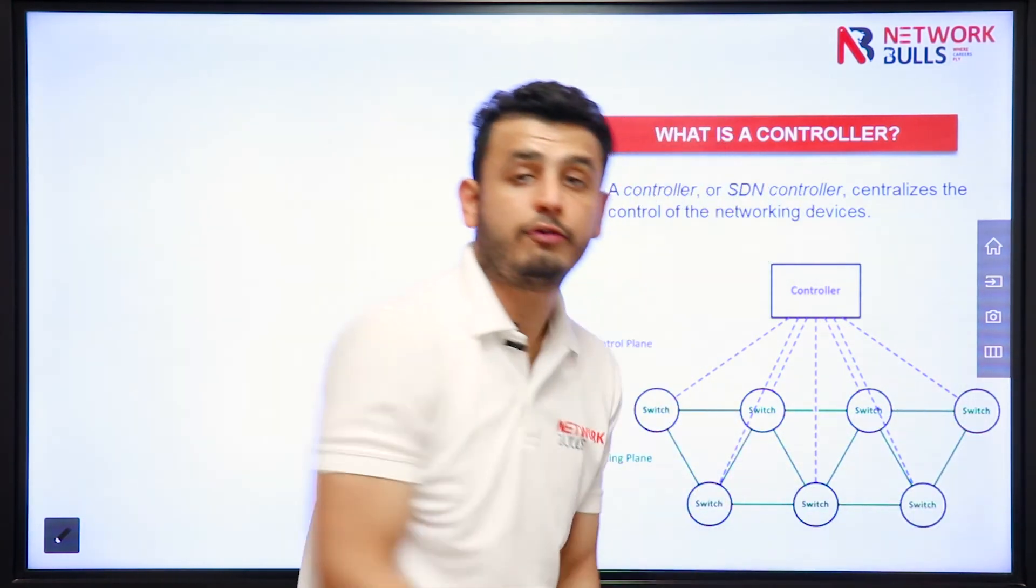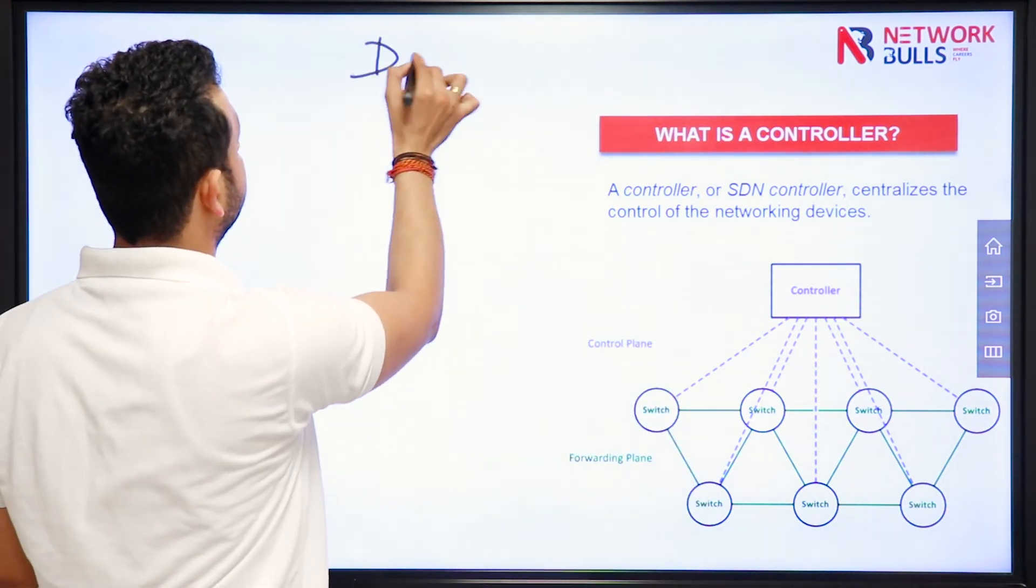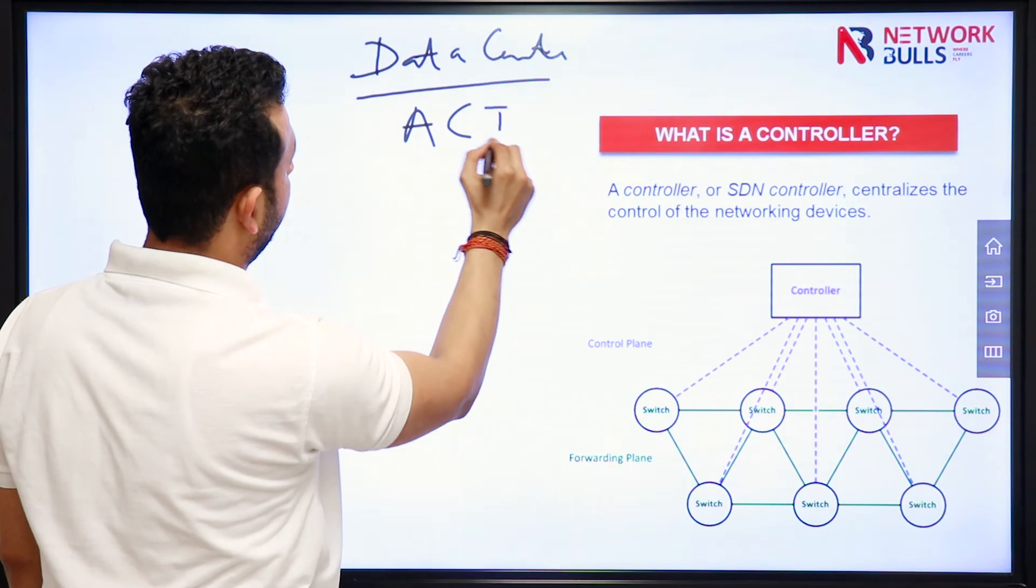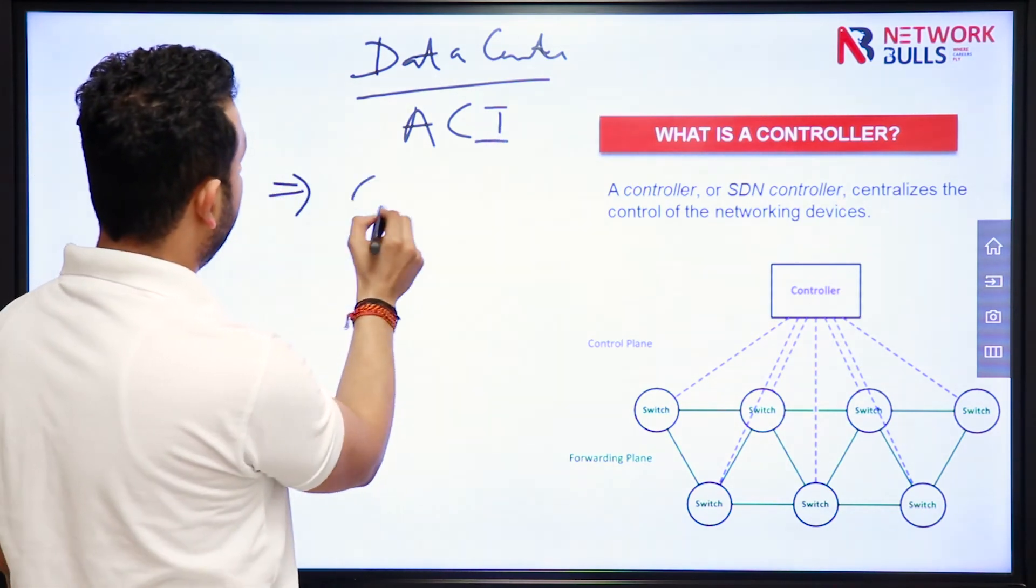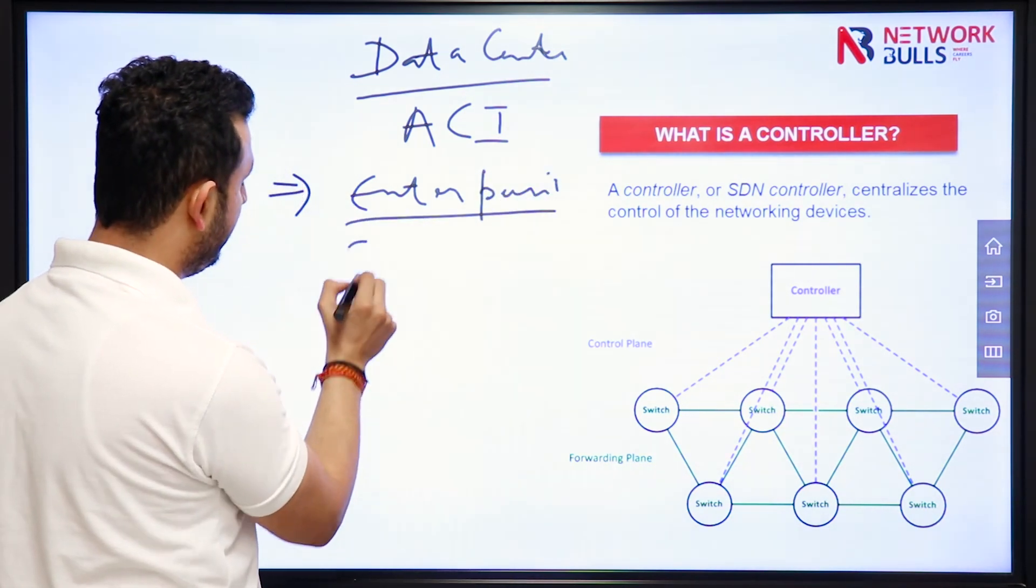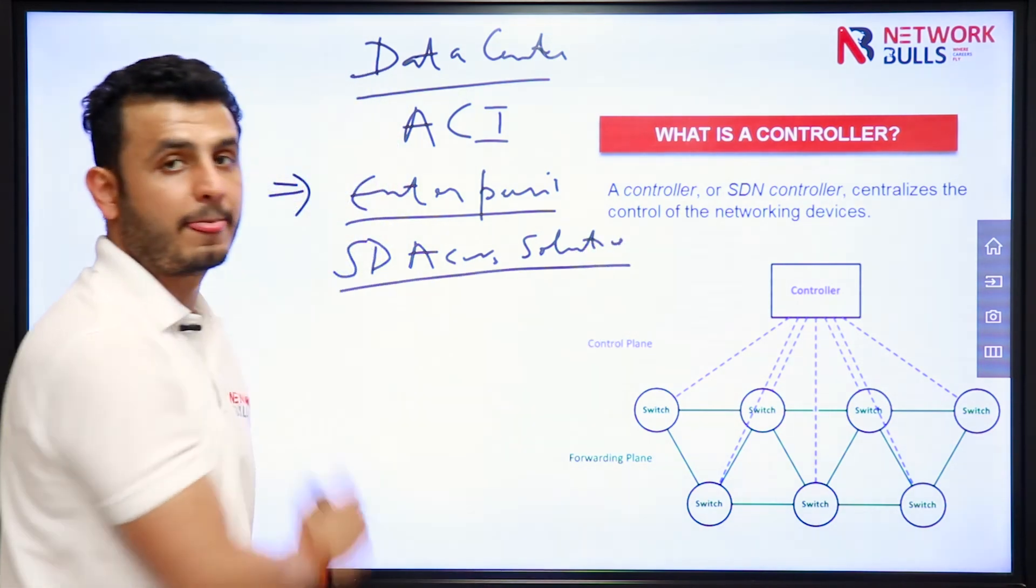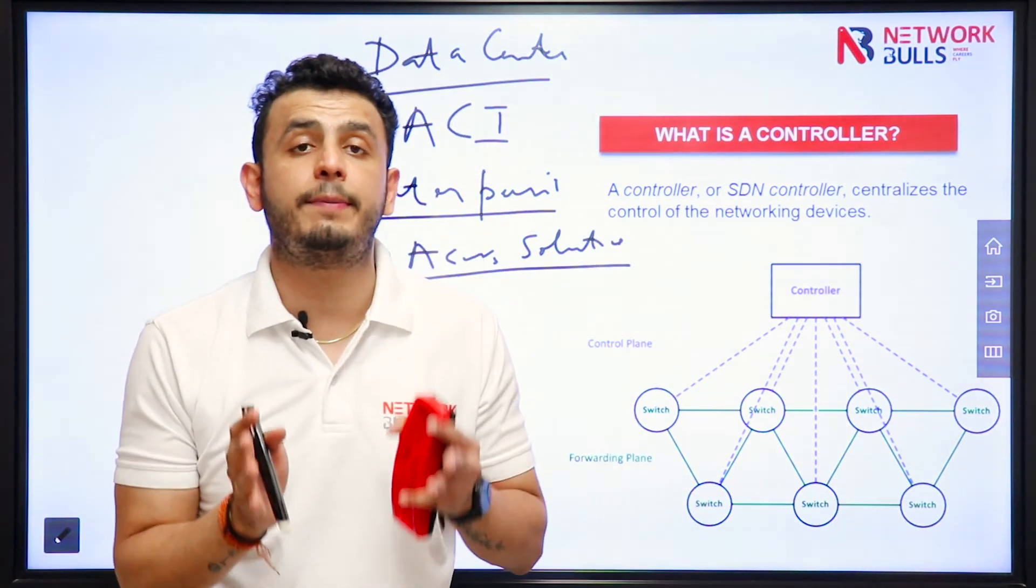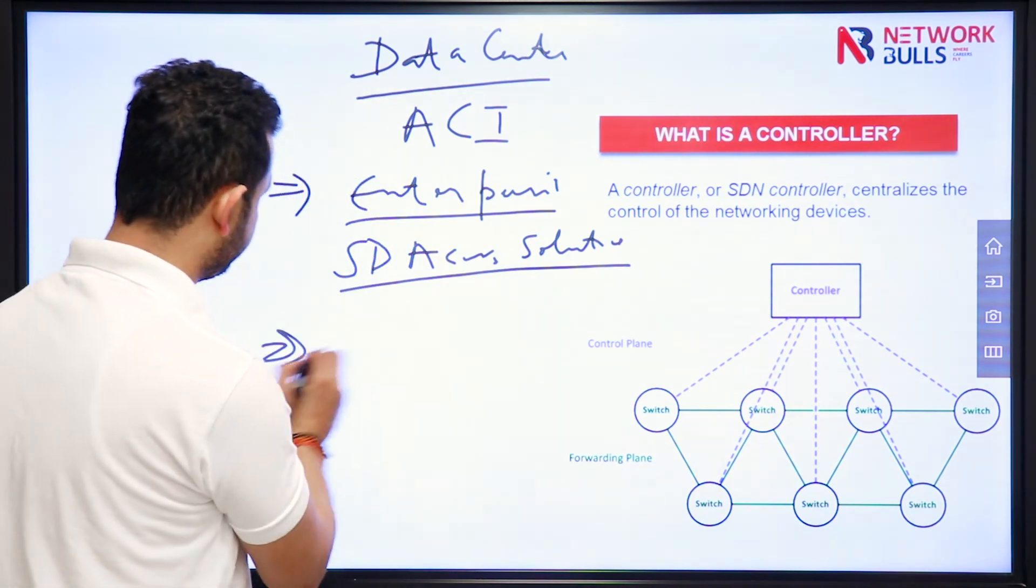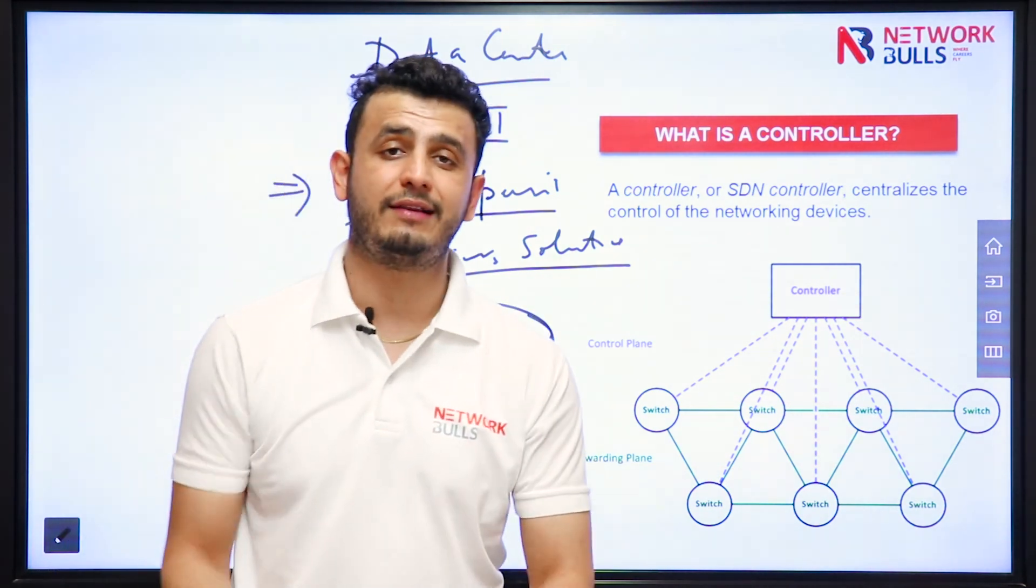If I talk from Cisco's perspective, Cisco introduces SDN first of all in data centers, Cisco call it ACI. Then they launch SDN for enterprise networks and Cisco name it SD Access. This is the access solution in which they are using DNA as a controller. And Cisco also implemented SDN for WAN solutions. Cisco name it SD WAN and they are using V controllers for the same. We have V smart, V manage all that stuff under SD WAN.